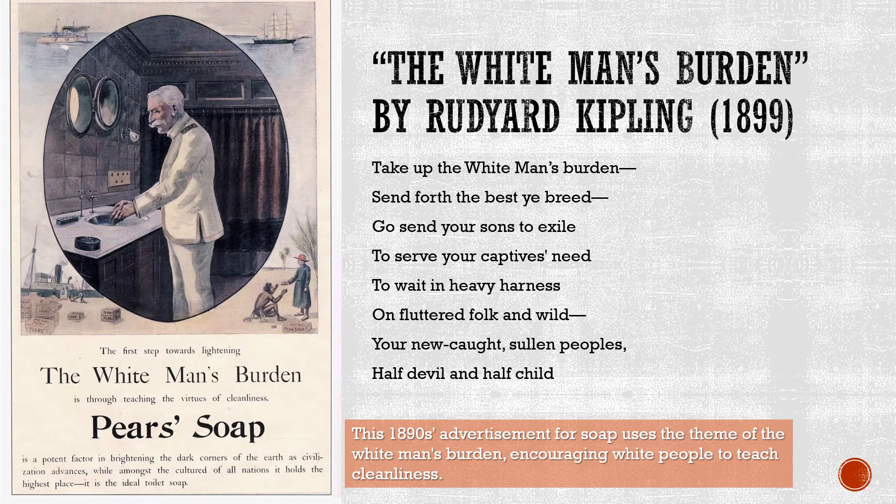Another example is just this advertisement for soap. It's an incredibly offensive racist ad. It says: 'The first step towards lightening the white man's burden is through teaching the virtues of cleanliness. Paris soap is a potent factor in brightening the dark corners of the earth as civilization advances, whilst amongst the cultured of all nations, it holds the highest place. It is the ideal toilet soap.' There is lots and lots of this type of racist literature from the 19th century — all about justifying and reinforcing the belief that Europe has every right to be doing the nasty, horrible things that they were doing.